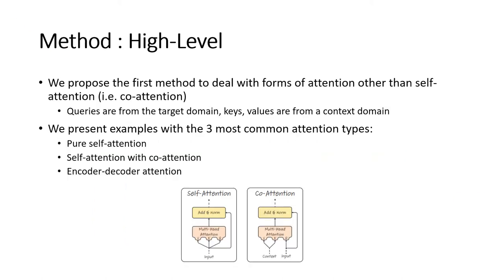Now we can move on to describe the method proposed by the paper. Our method is the first to deal with forms of attention other than self-attention, i.e., co-attention. In co-attention, the queries come from the target domain, while the keys and values come from a context domain. We present examples with the three most common forms of attention: pure self-attention, self-attention combined with co-attention, and encoder-decoder attention.